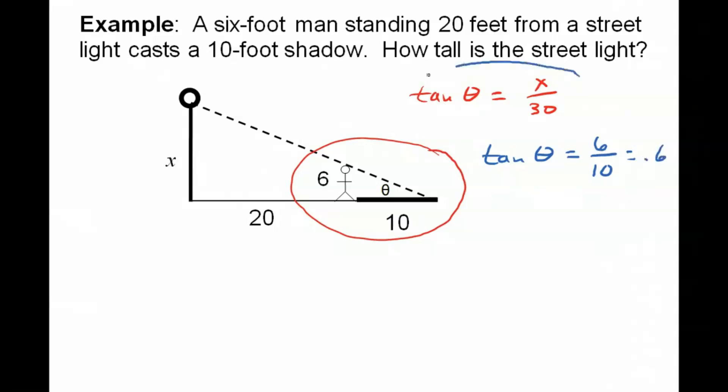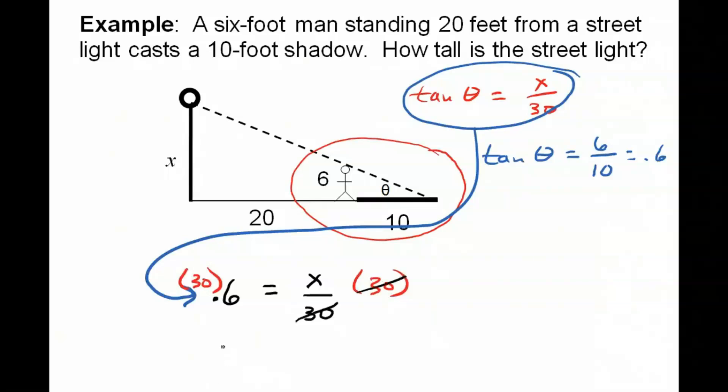So let's take this equation and move it down here and fill in 0.6 for the tangent of theta because I just found that the tangent of theta is 0.6. So now I've got 0.6 equals x over 30. This is relatively easy to solve. I just need to multiply both sides by 30. And I get x equals 18. That means that the height of this lamp is 18 feet.